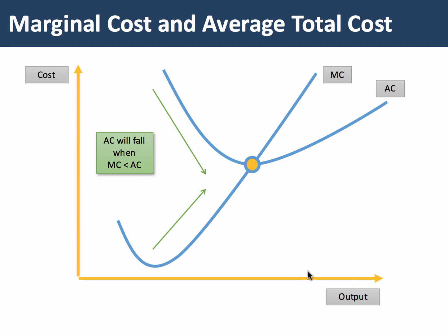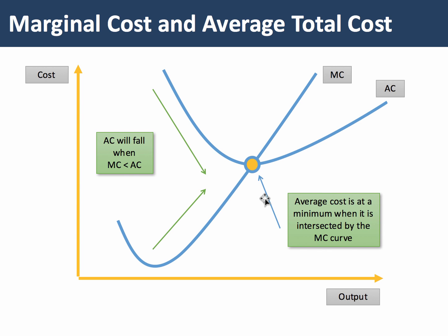Looking at this diagram, when the marginal cost — the cost of the next unit produced — is less than the average cost, then the average cost must be falling. Once the marginal cost meets and intersects the average cost, average cost is minimised. So the lowest point in the average cost curve must be where marginal cost intersects average cost.